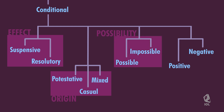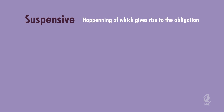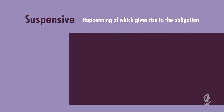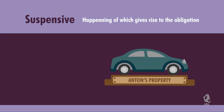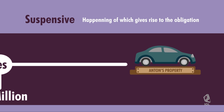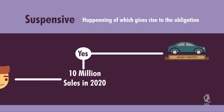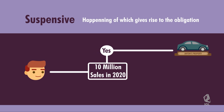In a suspensive condition, the happening of which shall give rise to the obligation. An example: Anton shall give Henry a car if Henry will be able to reach sales of 10 million pesos for the year 2020. If Henry's sales for 2020 reach 10 million pesos, this will give rise to Anton's obligation to give the car to Henry. The obligation of giving a car is not demandable until the happening of the condition.